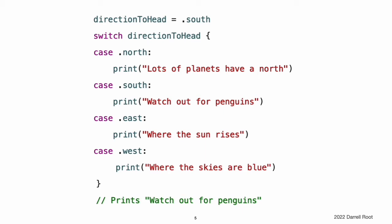Matching Enumeration Values with a Switch Statement. You can match individual enumeration values with a switch statement. You can read this code as: consider the value of directionToHead. In the case where it equals .north, print "Lots of planets have a north." In the case where it equals .south, print "Watch out for penguins." And so on.